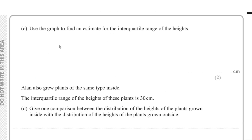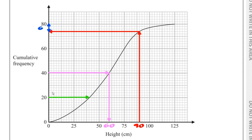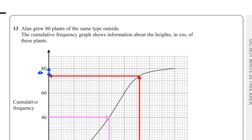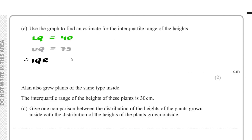Part C: Find an estimate for the interquartile range. The lower quartile: a quarter of 80 is 20; reading across from 20 and down gives 40. The upper quartile: three-quarters of 80 is 60; reading across from 60 and down gives 75. Interquartile range = 75 - 40 = 35.